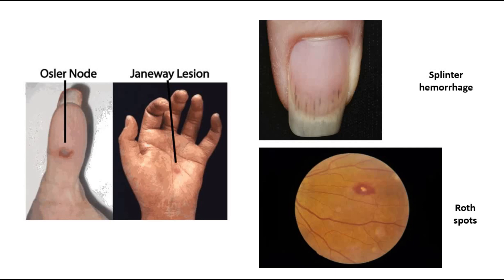Another picture shows splinter hemorrhage. And Roth spots are also a finding in infective endocarditis — described as a boat-shaped retinal hemorrhage with a pale center. We can look for these signs to suggest infective endocarditis.